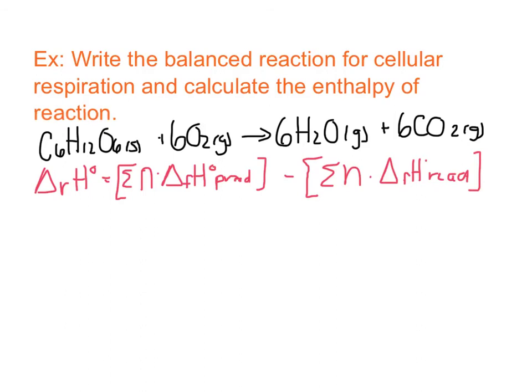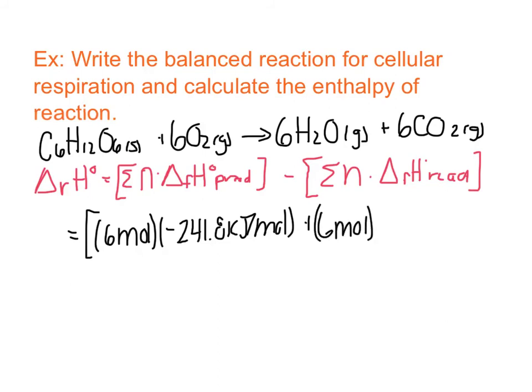we always talk about our products first, because that's the way our formation reaction is written, and we don't actually have to flip its sign. So we get that this is equal to the sum of 6 moles of water, and water now has an enthalpy for a gaseous form. It's negative 241.8 kilojoules per mole, plus 6 moles of CO2 at negative 393.5 kilojoules per mole